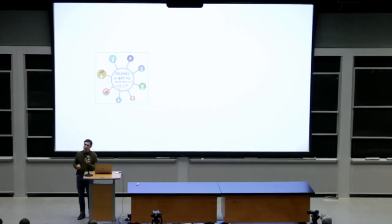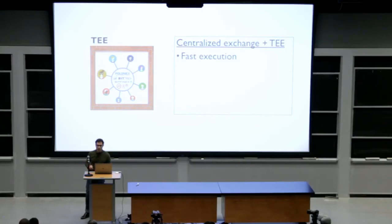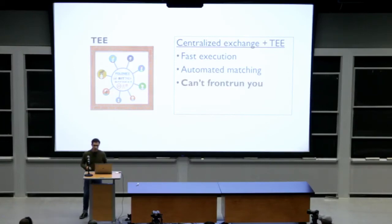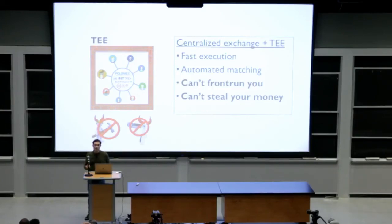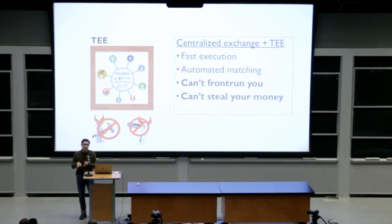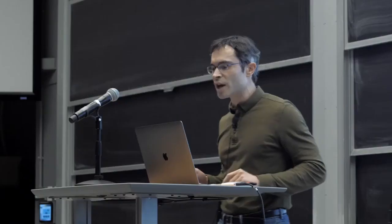What would happen if we took a centralized exchange and ran it in a trusted execution environment? We could get the best of both worlds: fast execution and automated matching that typifies centralized exchanges, while also solving centralized exchange problems. The exchange could no longer front-run you and couldn't steal your money — because the integrity and confidentiality guarantees of the TEE ensure the operator can't tamper with or see transactions or users' private keys. We've realized such a TEE-backed exchange in a system called Tesseract, which we're now in the process of commercializing.